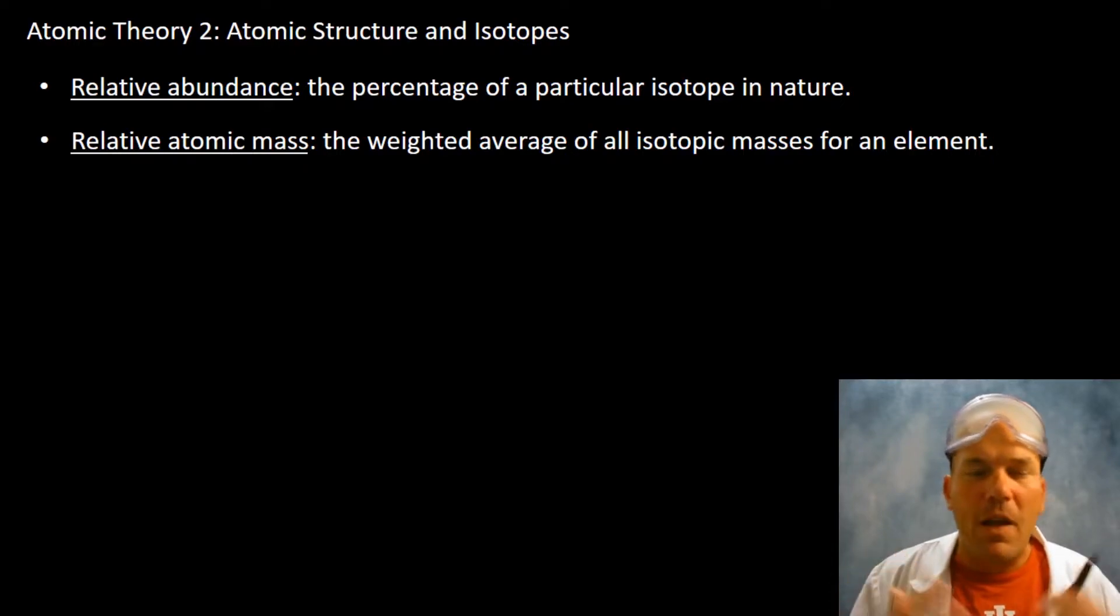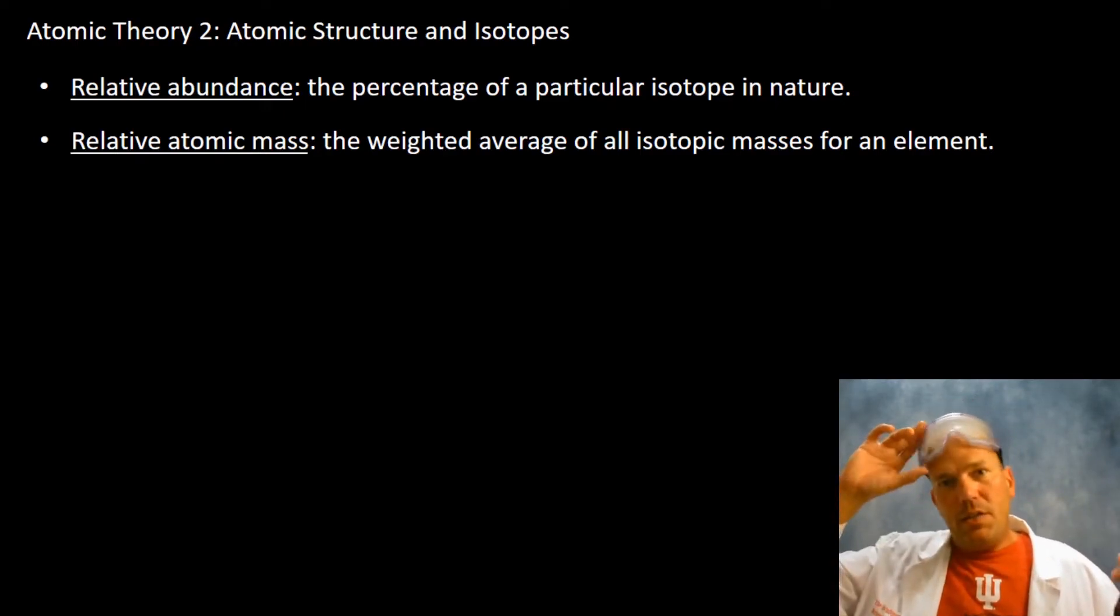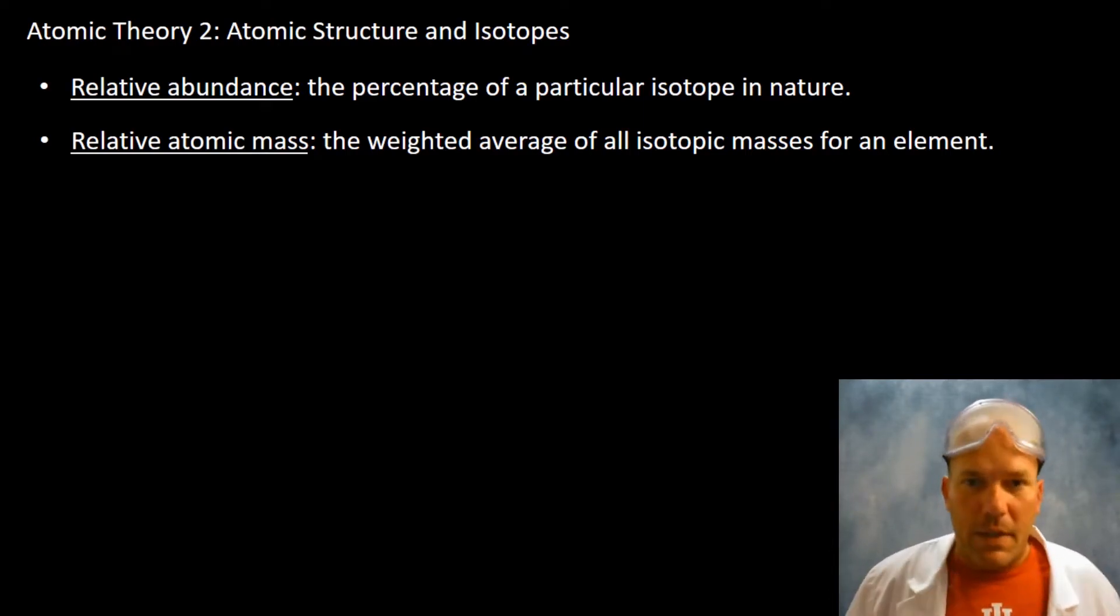So two additional definitions here: relative abundance and relative atomic mass. Relative abundance is the percentage of a particular isotope in nature. Not all isotopes are found equally in nature. We saw that with carbon: carbon-12 was far more abundant, almost 99 percent. Relative atomic mass is that weighted average of all isotopes of an element in nature. You ever wonder why you look at the periodic table and lithium is 6.97 for the atomic mass, why isn't it seven? Carbon 12.01? That's because those are the weighted averages.